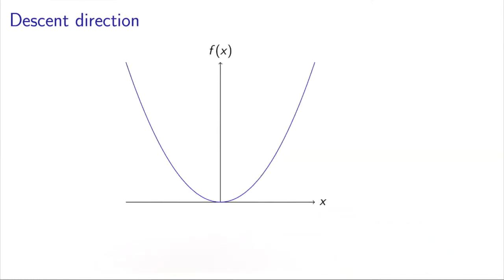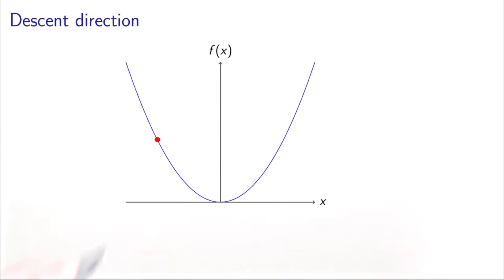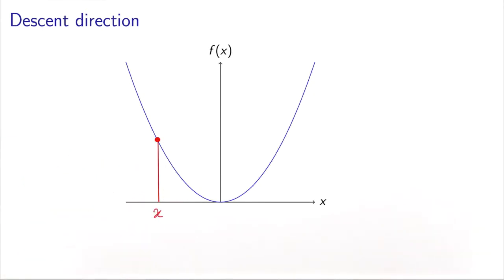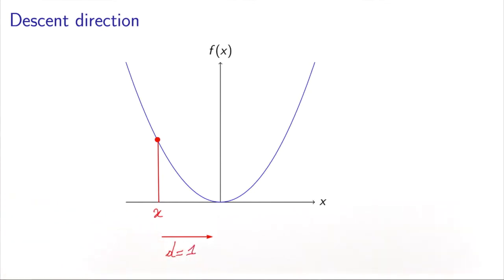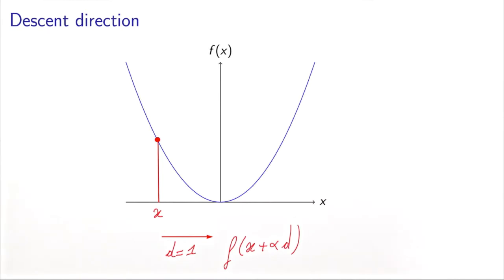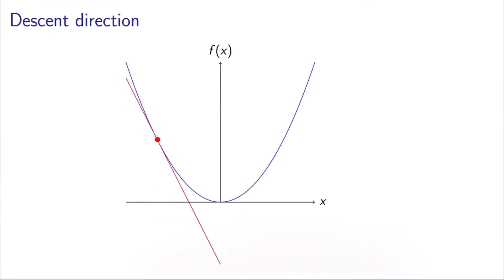Let's take an example. Consider this function f of x, which is plotted on this graph. We consider a point x and a direction d going to the right, so d equals 1. We are interested in finding the value of f of x plus alpha times d. If you calculate the derivative at x, you get the tangent, which has a negative value — the slope is negative. So if you follow this direction d going to the positive, the value of the objective function will decrease.